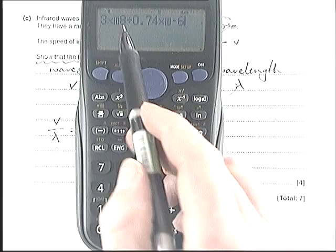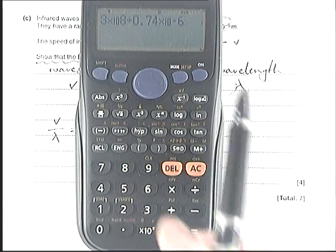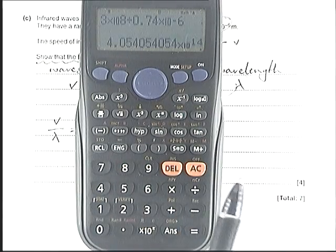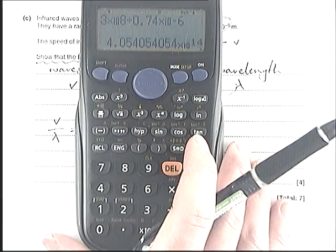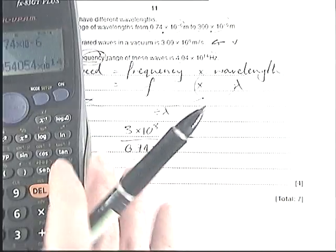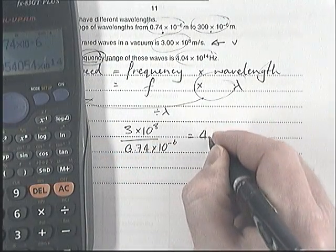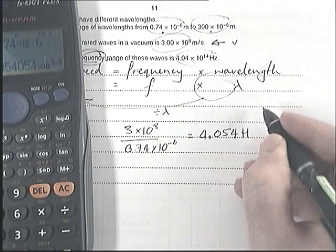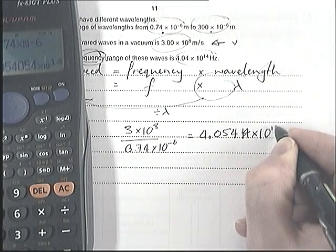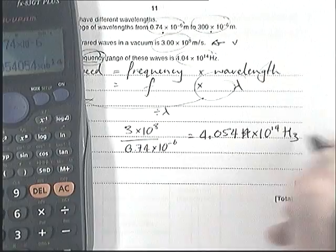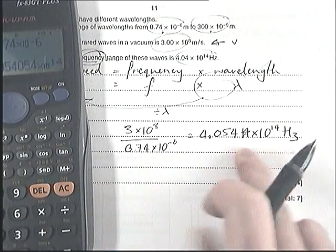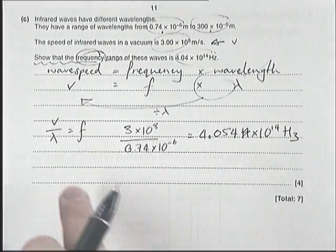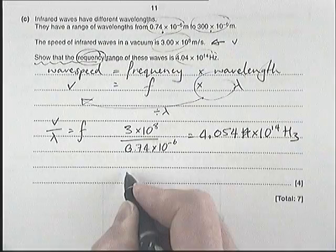That is 4.054 × 10^14 Hertz—it's not Hertz, it's times ten to the fourteen Hertz. Small wavelength, high frequency. Then we do the other one. It's the same calculation: 3 × 10^8 divided by 300 × 10^-6.